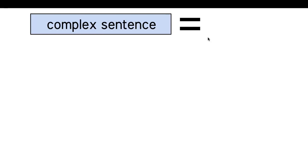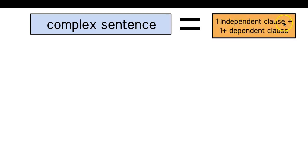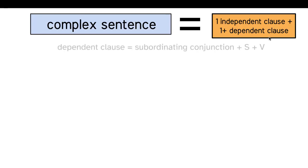First we have to know: what is a complex sentence? It is a sentence made up of one independent clause and one or more dependent clauses. On your paper you need to add that little plus sign to the dependent clause to show that you could have more than one dependent clause. A dependent clause is a subordinating conjunction followed by a subject and a verb.